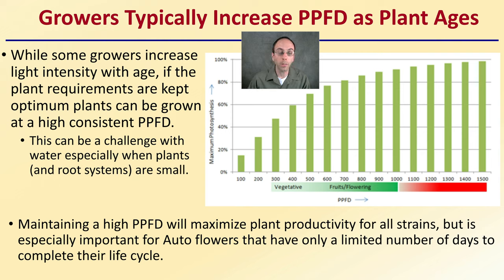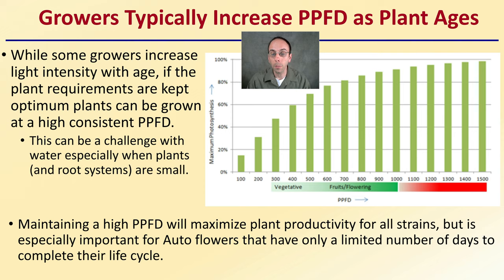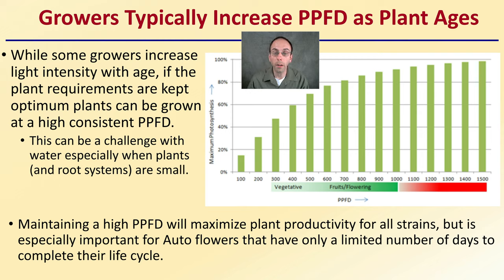Maintaining high PPFD will maximize plant productivity for all strains, but it's especially important for autoflowers that have only a limited number of days to complete their life cycle. You want to give the plant as much light as it can handle without burning it or causing negative setbacks, and typically this can be a little bit higher than some growers often provide their plants.